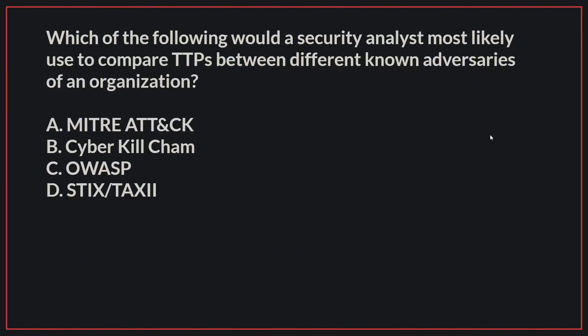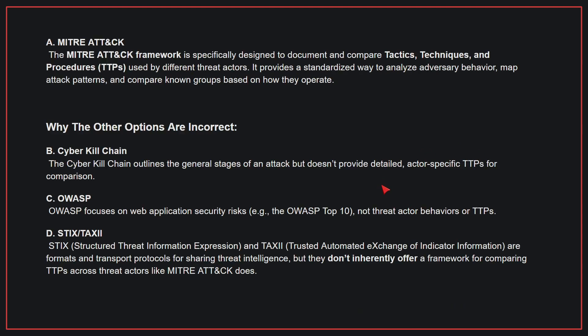Therefore, the correct answer is D. Which of the following would a security analyst most likely use to compare TTPs between different known adversaries of an organization? The correct answer is A. MITRE ATT&CK. The MITRE ATT&CK framework is specifically designed to document and compare tactics, techniques, and procedures used by different threat actors. It provides a standardized way to analyze adversary behavior, map attack patterns, and compare known groups based on how they operate.